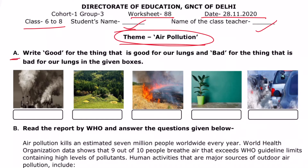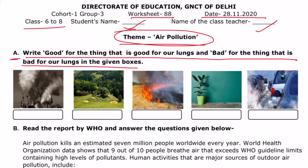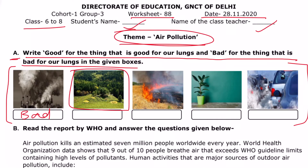Question number one: write good for things that are good for our lungs, and bad for things that are bad for our lungs in the given boxes. We have some pictures here and we are going to tell which is good and which is bad for our lungs. What is happening here? Smoke is coming from a factory — that is bad. And here we have greenery and fresh air — that is good for our lungs.